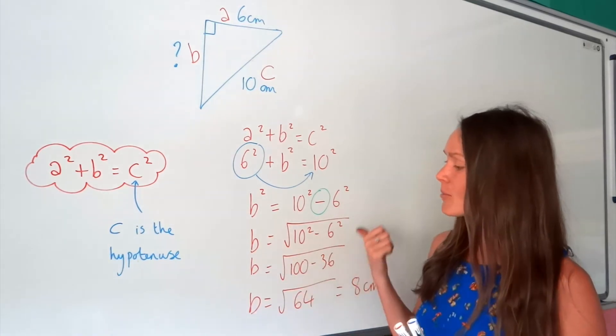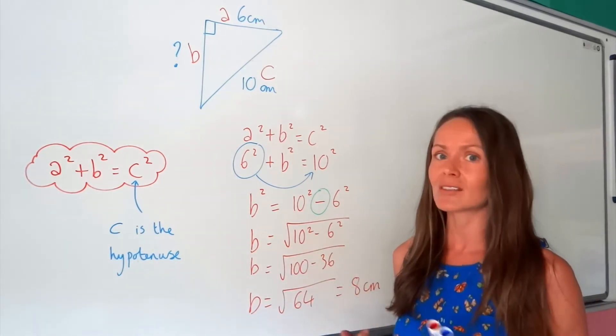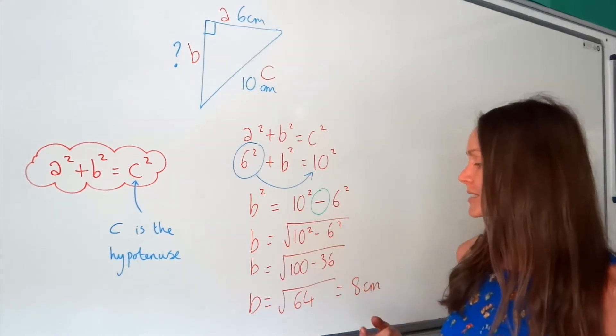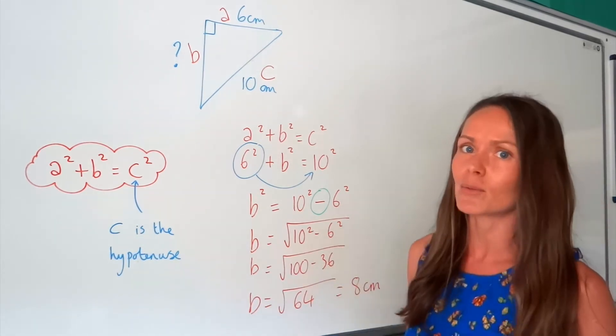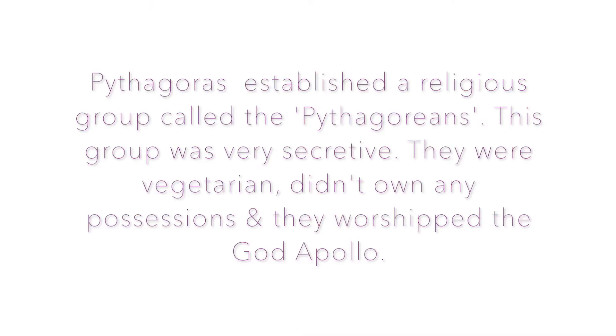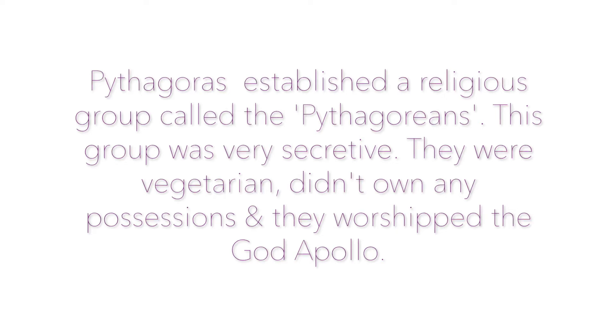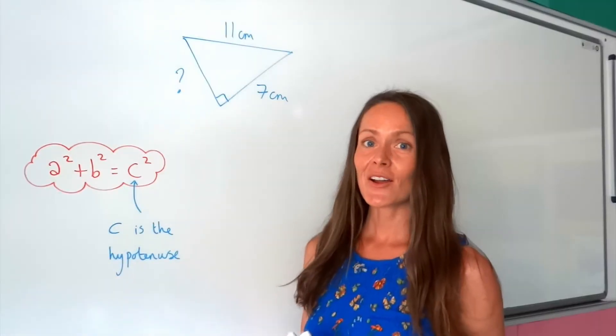So that's the method when you're finding a shorter side, so A or B. So notice how this time you had to do a subtract, unlike when you're finding the hypotenuse.